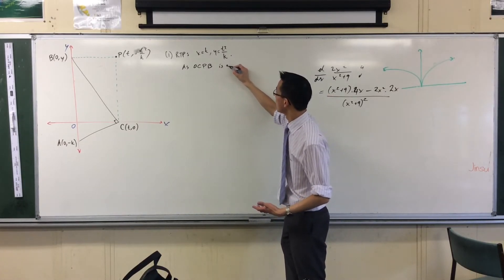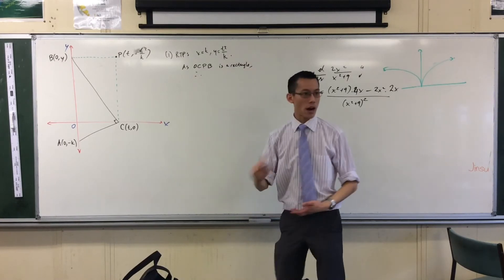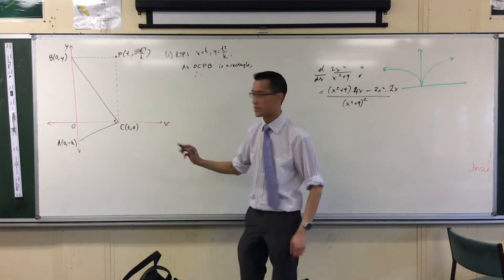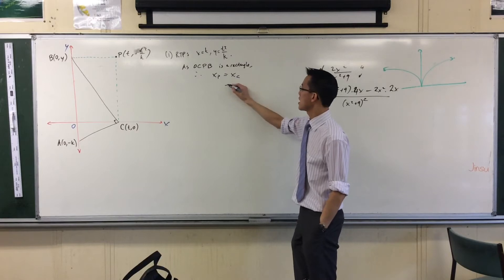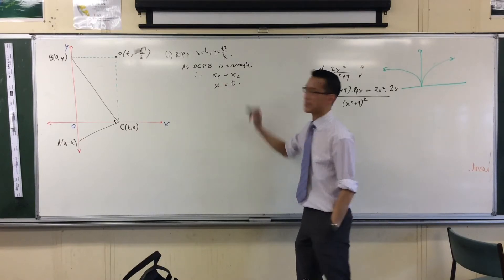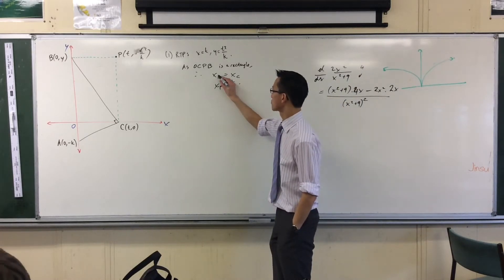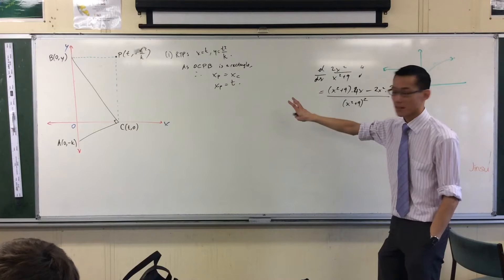So, as OCPV is a rectangle, I'm using that geometric property. Therefore, P shares the same x-coordinate as C. So x of P equals x of C, and that's the actual value. X equals 2. I might leave that point there because I'm going to have a couple more flying around. So, that bit's easy.